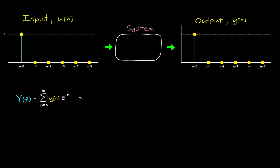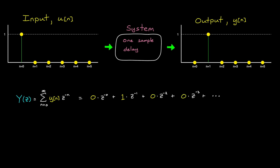Now let's say that the system actually delays the input by one sample — a one-sample delay. In this case, the impulse response is also delayed by one sample, and the Z-transform is 0 times Z to the minus 0, plus 1 times Z to the minus 1, plus 0 times Z to the minus 2, and so on. So a unit delay in the Z-domain is just Z to the negative 1. And a delay of N samples would just be Z to the minus N.